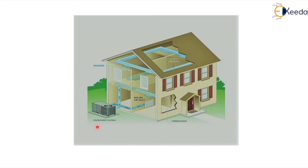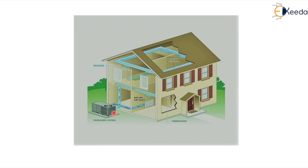In this diagram, you can see the packaged air conditioning system. Through this system, the conditioned air goes into the conditioned space via indoor units. This one is the return air duct, which brings air back from the conditioned space for reconditioning and recirculation. The packaged AC is a bigger unit, similar to a window AC.